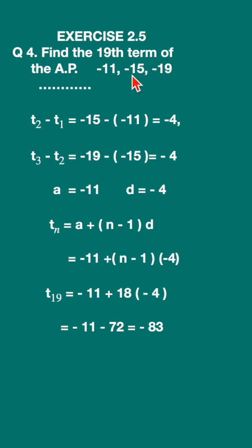t3 minus t2, third term minus second term, minus 19 minus of minus 15. Open the bracket, this becomes plus 15. Minus 19 plus 15 is minus 4.